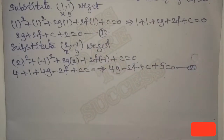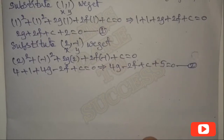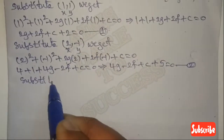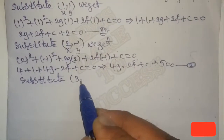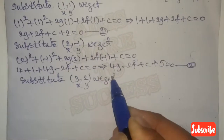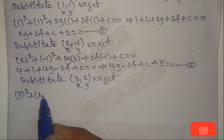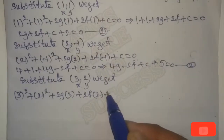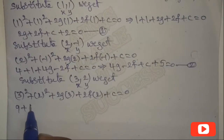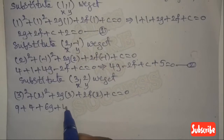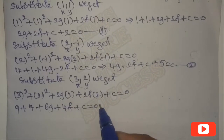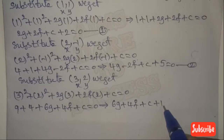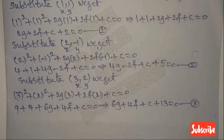Third point (3,2): substitute in the standard equation of the circle. We get 3² + 2² + 2G(3) + 2F(2) + C = 0, which gives 9 + 4 + 6G + 4F + C = 0, so 6G + 4F + C + 13 = 0. Let this be Equation 3.